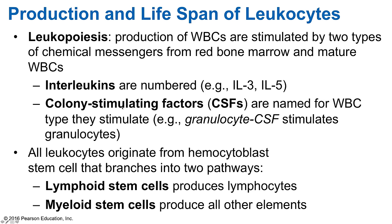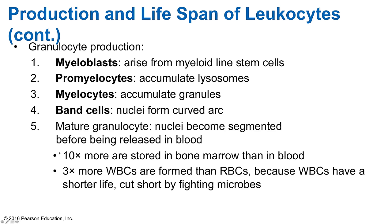All white blood cells start as hemocytoblast stem cells, branching into either lymphoid stem cells (producing lymphocytes) or myeloid stem cells (producing remaining WBCs, platelets, and red blood cells). For granulocyte development: the hematopoietic stem cell gives rise to a myeloid stem cell, which forms a myeloblast. The myeloblast accumulates lysosomes and becomes a promyelocyte. When distinct granules appear, it is termed a myelocyte — and cell division is complete at this point. The nucleus then arcs, forming a band cell. Just before leaving the bone marrow, the nuclei constrict and become segmented before entering blood circulation.